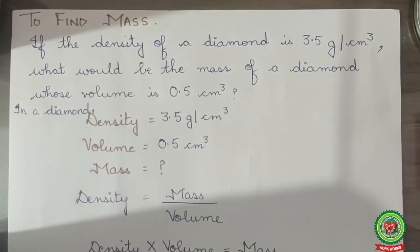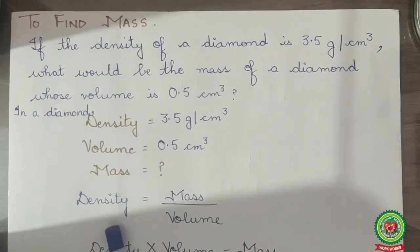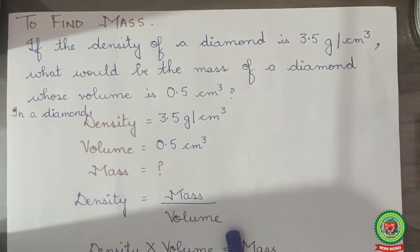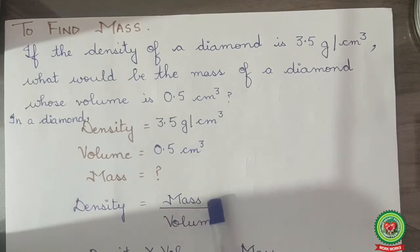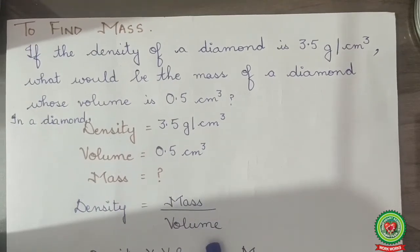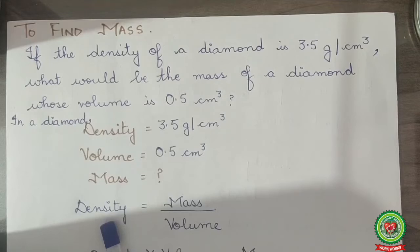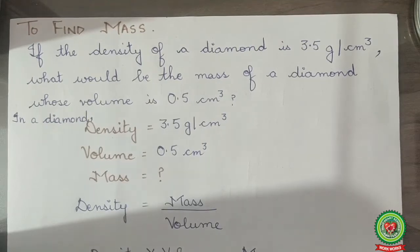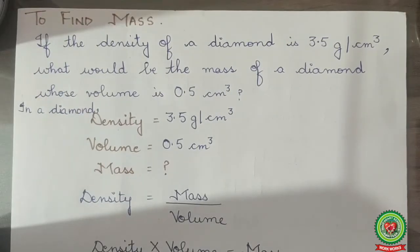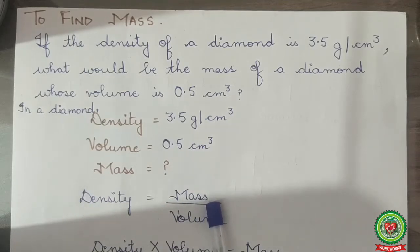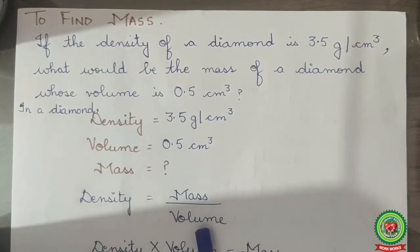Next is how to find mass of an object using the same formula density equals mass over volume. For finding the mass, we should know the volume and density of an object. Let's solve a numerical problem to understand how we can find mass when density and volume are given.